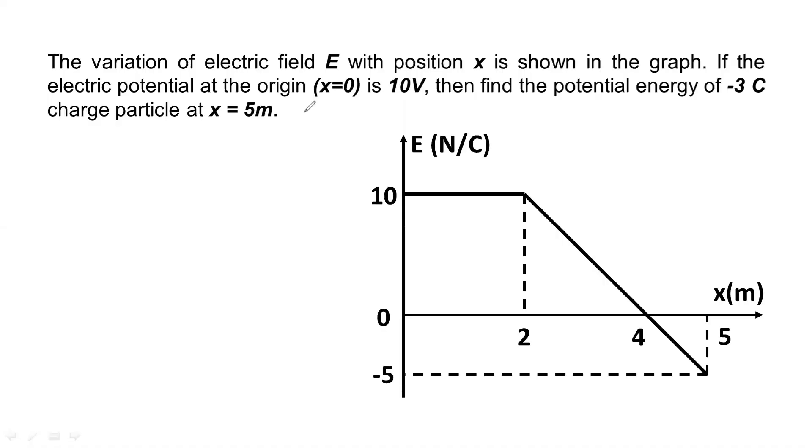Hello students, in this video we are going to have a special type of question. We have already seen the relation between electric field and potential difference. So the potential difference delta V is equal to negative integral E dot dr.